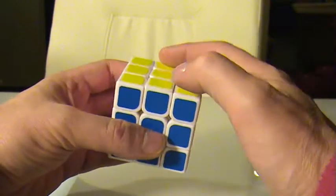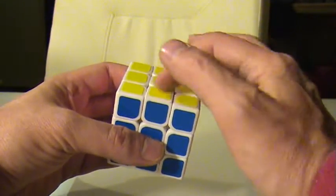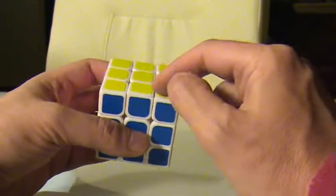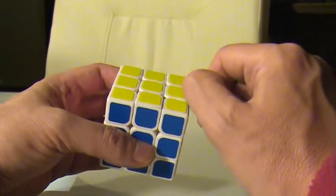That's an alternate algorithm when the two are across from each other. Now you can always do the three-way rotation, it's just you'd have to do it twice to handle it when you have it like this.